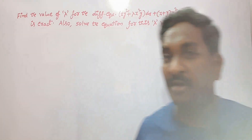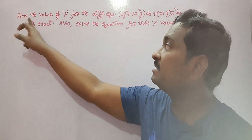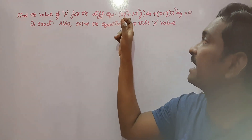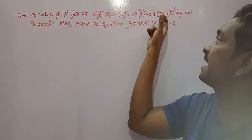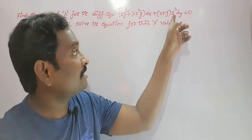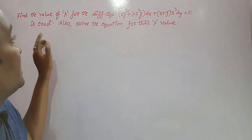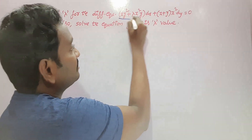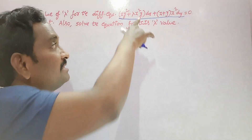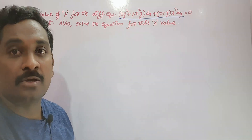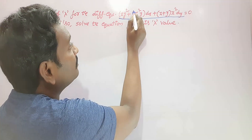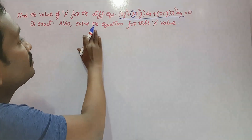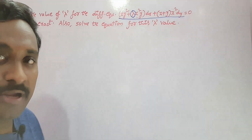See the next example on the concept of exact equations. Find the value of lambda for the differential equation: x y squared plus lambda x squared y dx plus x plus y times x squared into dy is equal to 0, given that the equation is exact. We have to find the unknown value of lambda involved in this equation, and after that solve the equation for this lambda value.